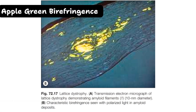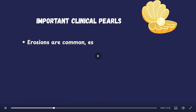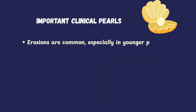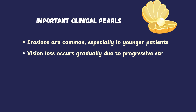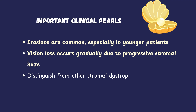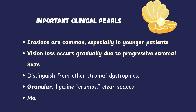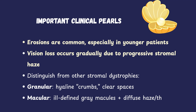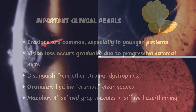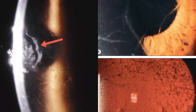A few important clinical pearls: recurrent erosions are common in lattice corneal dystrophy, more so in Type 1, especially seen in the younger age group in the first decade of life. Visual loss occurs in their 40s due to progressive stromal haze. It's important to differentiate lattice dystrophy from other stromal dystrophies such as granular and macular dystrophies. This image illustrates recurrent erosions in a patient with lattice dystrophy along with typical lattice lines seen in both diffuse and retro-illumination.